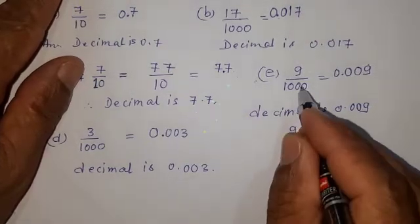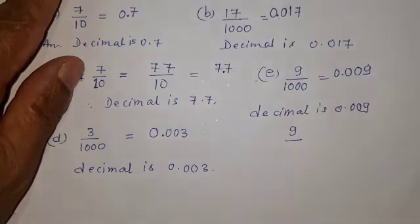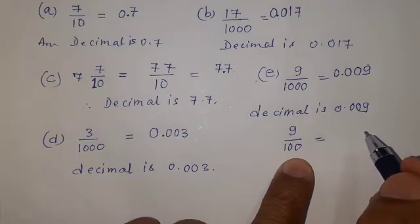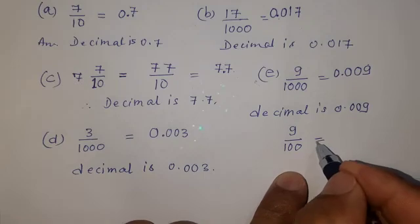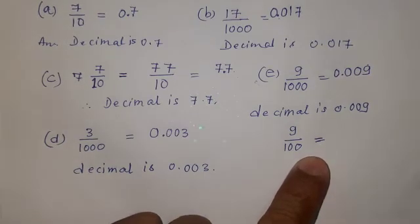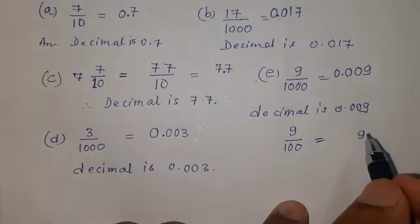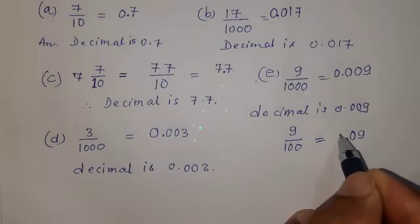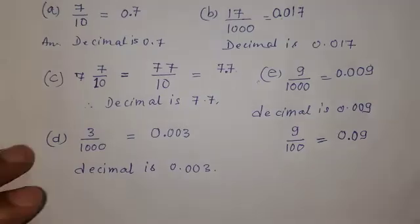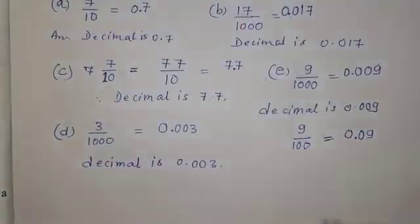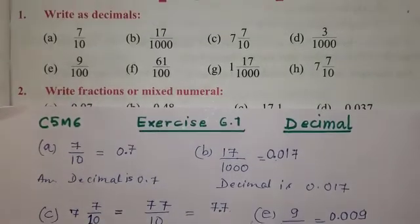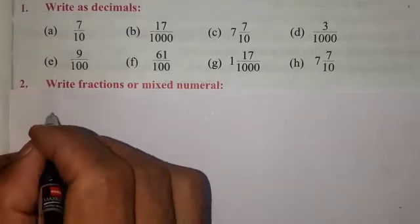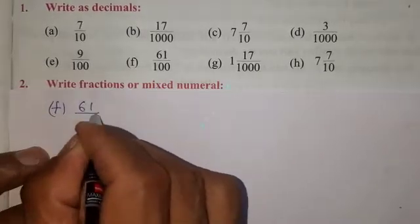9 by 100 — by mistake that is 0. This is very very important for Class 5. The answer is 0.009. Now F number: 61 by 100.